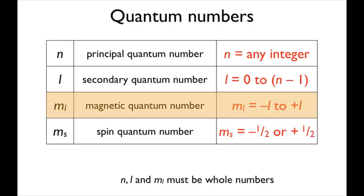The principal quantum number tells you about the energy of the orbital, the secondary quantum number tells you about the shape of the orbital, and the magnetic quantum number tells you about the orientation of an orbital. The fourth quantum number, ms, is the spin quantum number, and this can be either plus a half or minus a half.